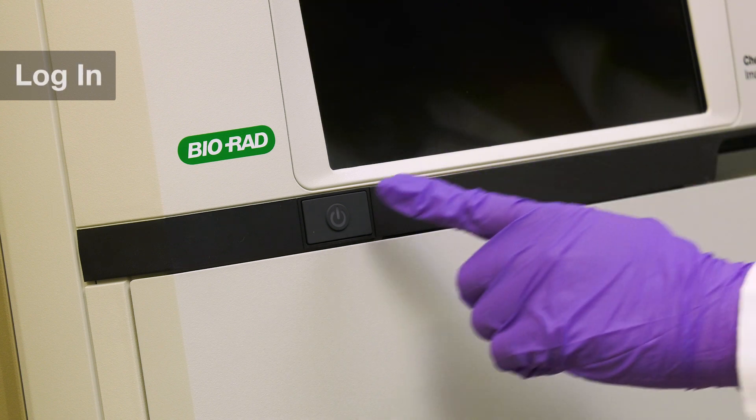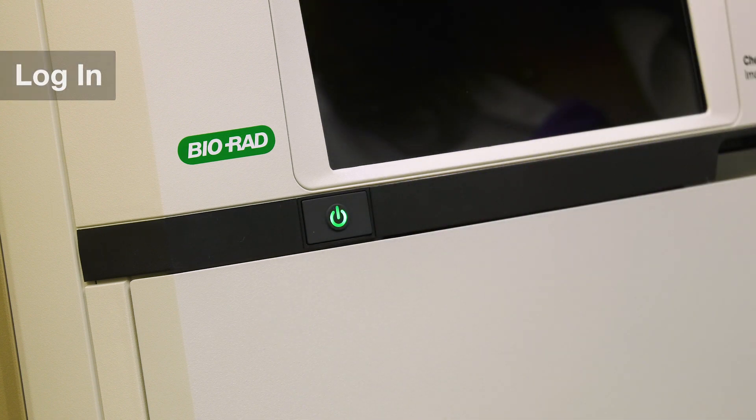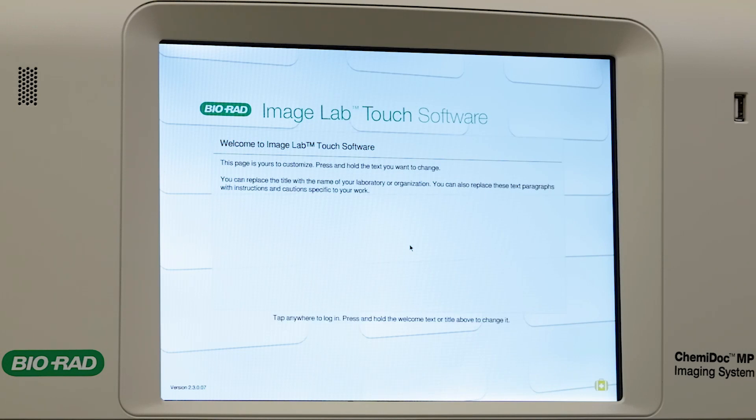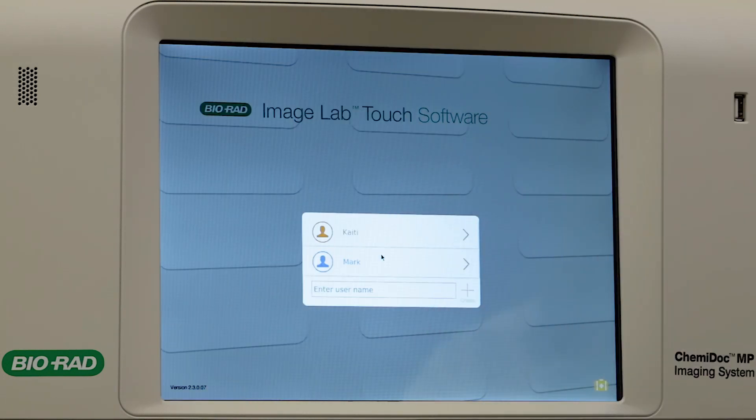To turn your ChemiDoc on, push the green button in front of your instrument. When the customizable home screen appears, tap anywhere to bring up the login menu.